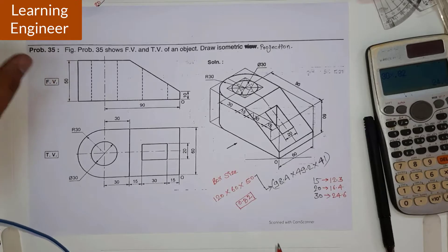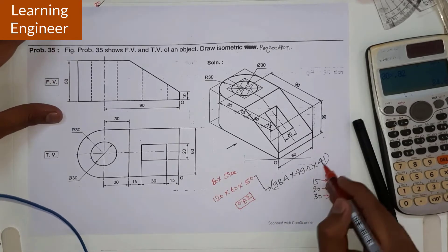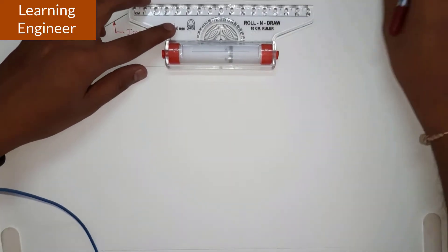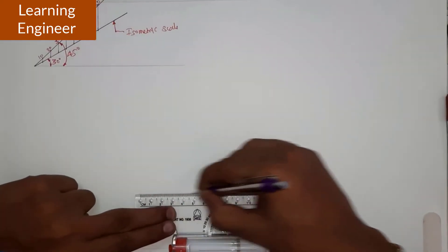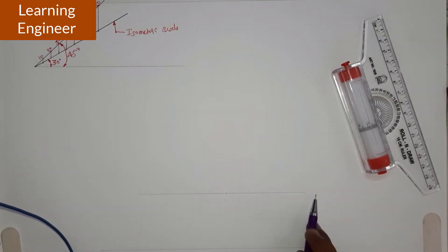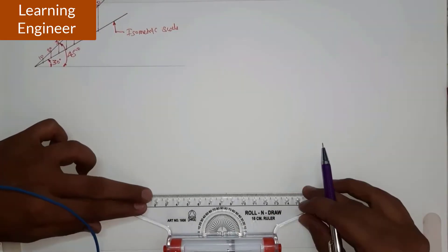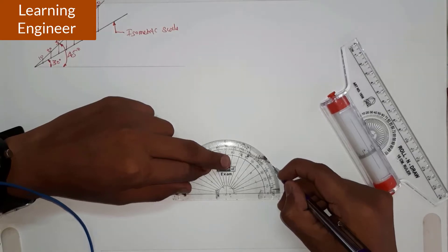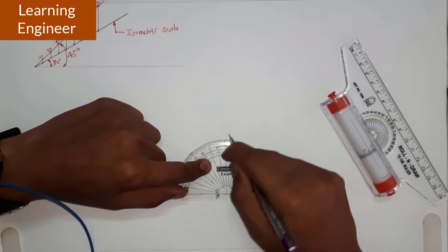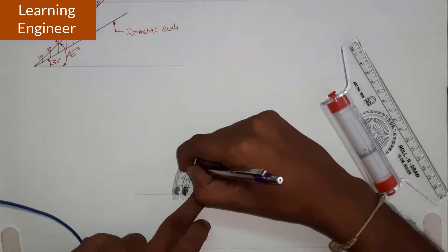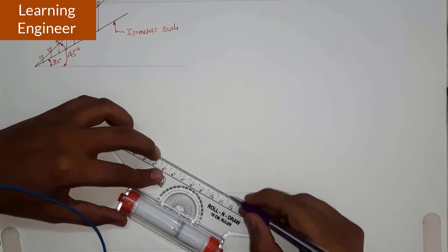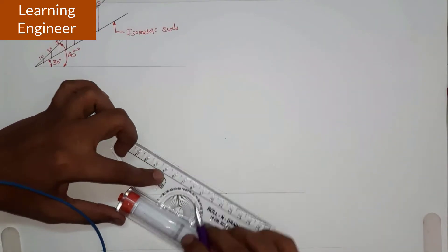The very first step is to draw the box using these converted dimensions. We draw a horizontal line and mark a point on it. From that point, we mark 30 degrees, 90 degrees, and 30 degrees on the other side. So we have marked the 30°, 90°, and 60° angles and join all the marked points.